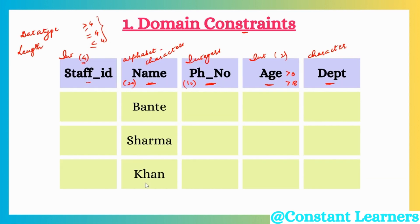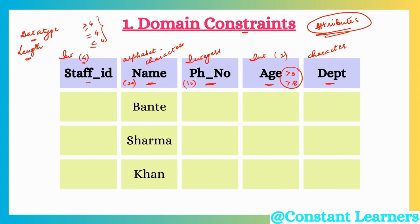The first is domain constraints. The example we just saw comes under domain constraints — declaring the data type acceptable for a particular attribute, declaring the length of data allowed in that attribute, and putting restrictions such as age being greater than 18 or greater than 0. Any restrictions that we put on the attributes come under domain constraints. Whenever we talk about imposing restrictions on attributes, we are talking about domain constraints.